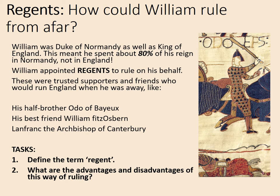A regent is someone who rules the kingdom on behalf of the king while he's not there. An effective regent like Lanfranc could respond to events quickly without consulting the king — putting down rebellions effectively. However, disadvantages include putting enormous trust in one person: if they become disloyal, that's a massive risk. It may also encourage rebellion, as with the revolt of the earls, where rebels expected success because William was away. An ineffective regent might not know whether they're acting in the king's best interests, so an effective regent was incredibly helpful and an ineffective one could be exactly the opposite.